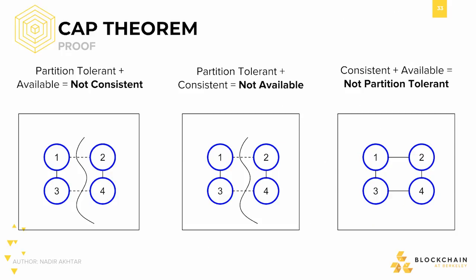In order to prove the CAP Theorem, let's run through some examples. In each example, we're going to show a situation in which choosing two properties forces us to yield the third. Let's pretend this is a database which stores my favorite color. In our first example, let's choose partition tolerance and availability.